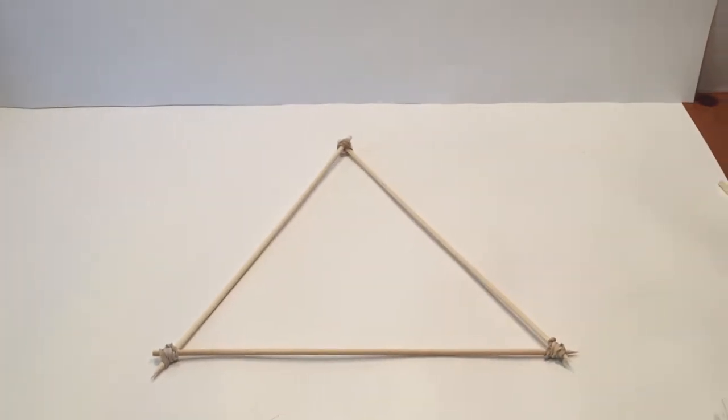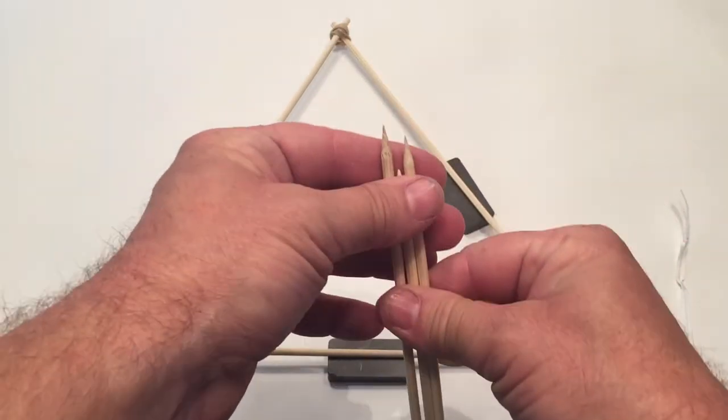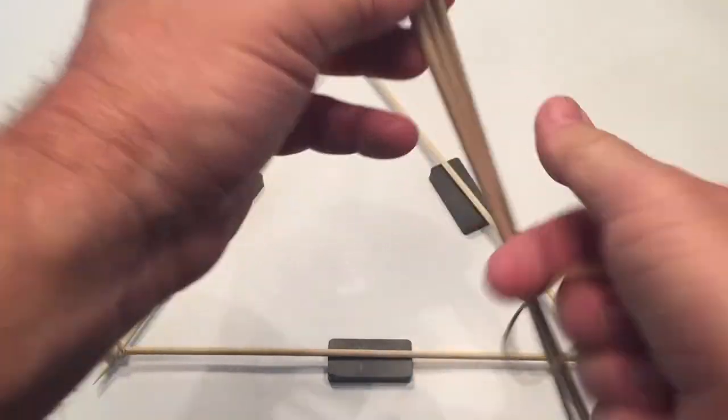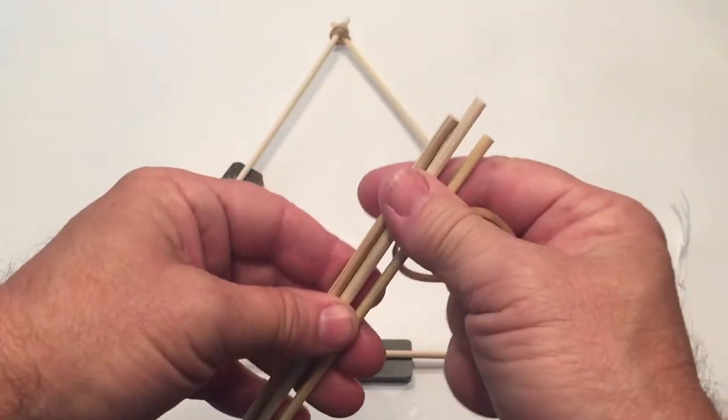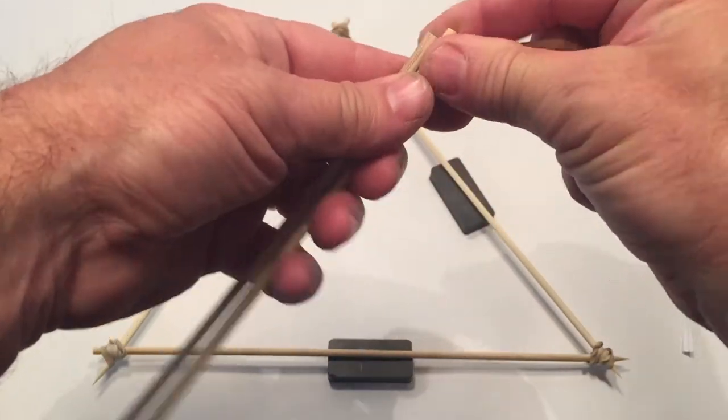Now we're going to work on the second part, the top part. What we're going to do for the top part is we're going to take all three of the skewers at the same time this time. They don't have to be crossed over. I'm going to start with the non-pointed ends.